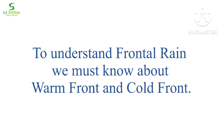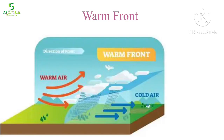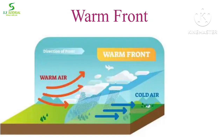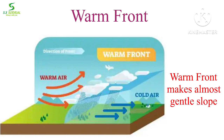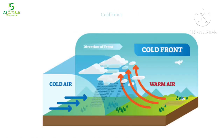To understand frontal rain we must know about warm front and cold front. A warm front is a type of front where the warm air mass moves faster towards the cold air mass, and as warm air mass is lighter it rises up above the cold air mass. This type of front is termed a warm front, and it makes an almost gentle slope.